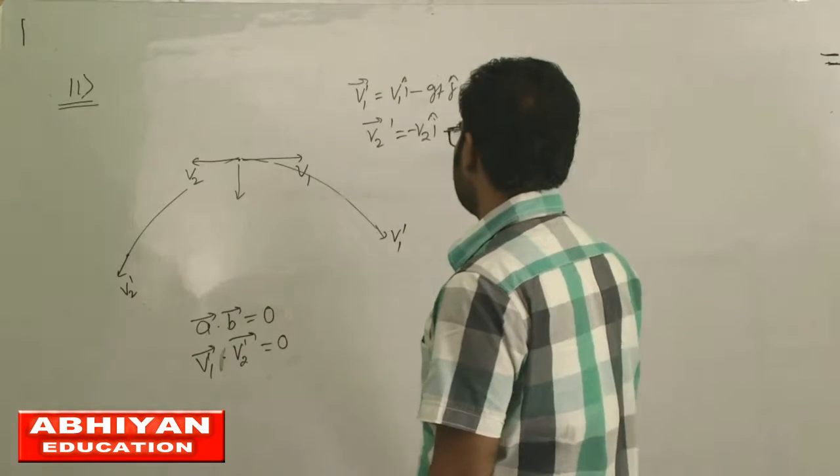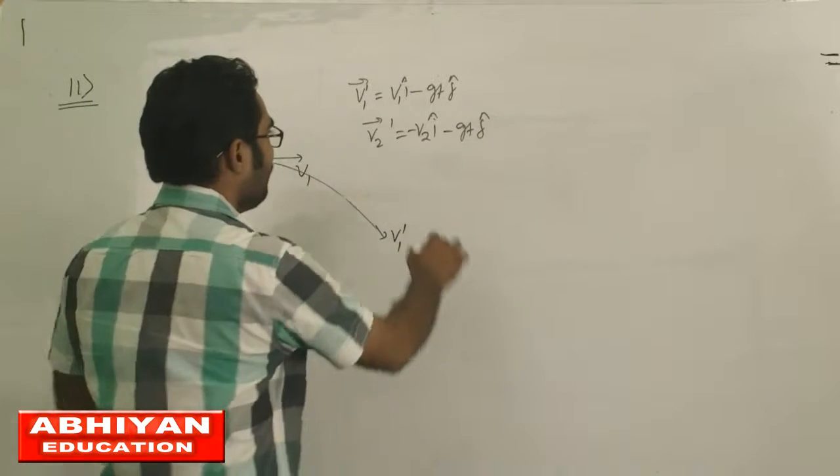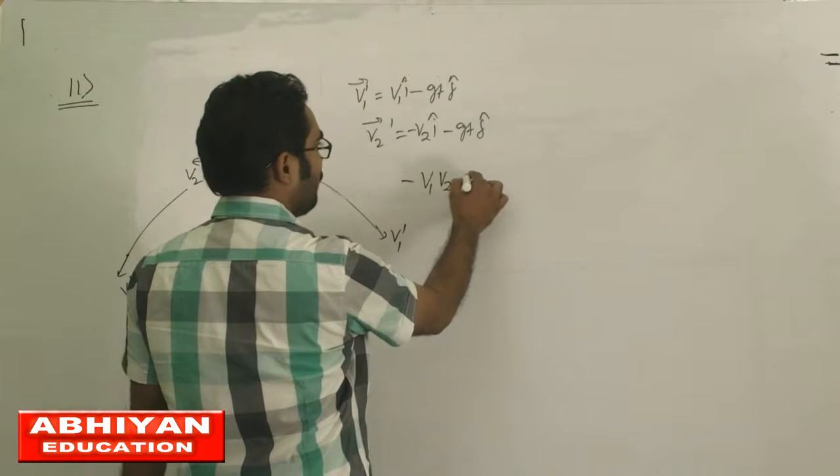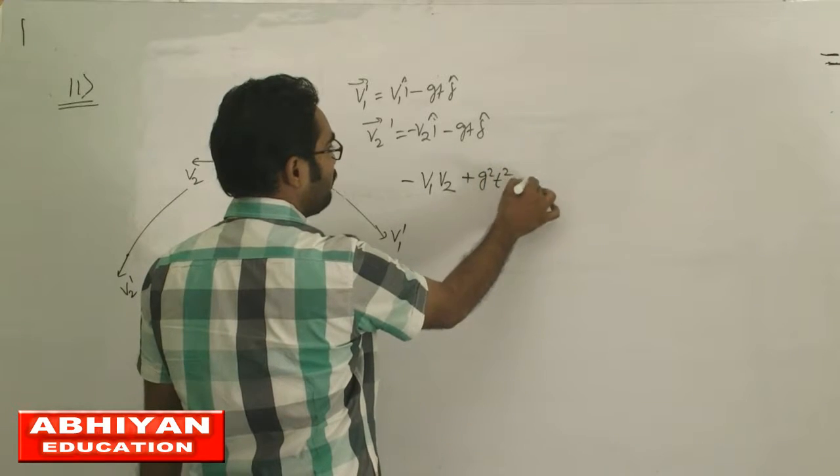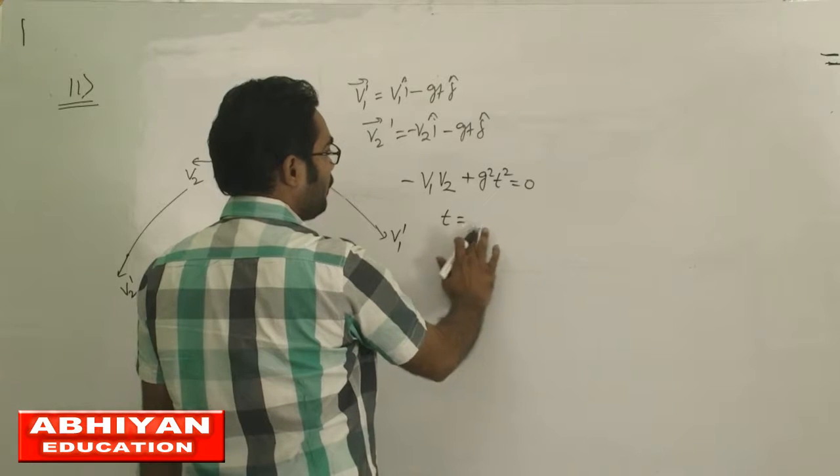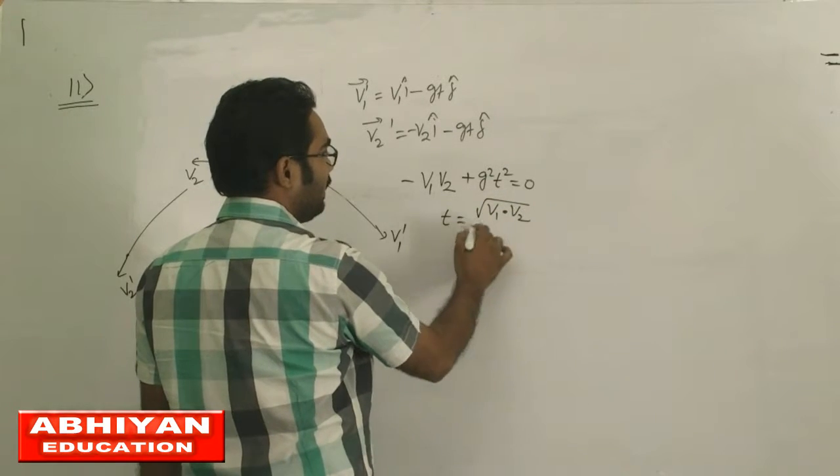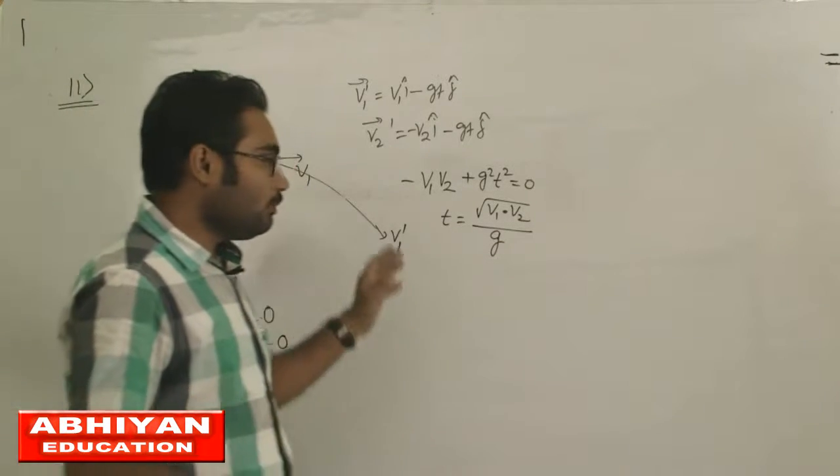Taking the dot product of these two and setting it to zero: i dot i gives minus V1 V2, and j dot j gives plus g squared t squared equals to zero. So the value of t is root under V1 V2 by g. This is the time at which the two velocity vectors become perpendicular to each other.